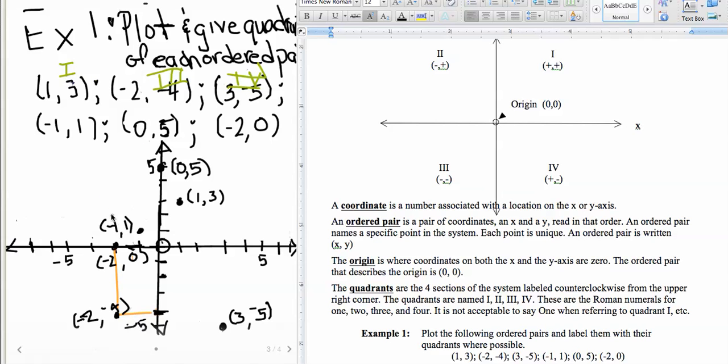And then finally, negative 1, 1, that's in the second quadrant. And the others don't have quadrant information. They're on the axes. This one, remember, is on the y axis. And the other one, negative 2, 0, is on the x axis.